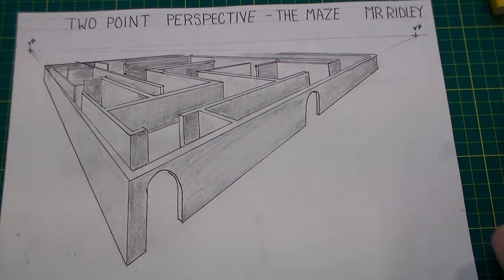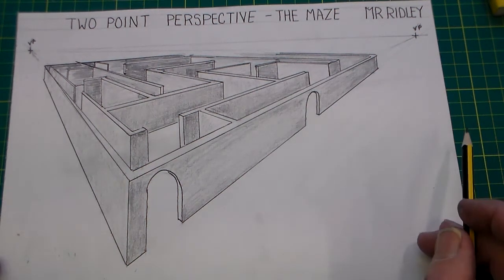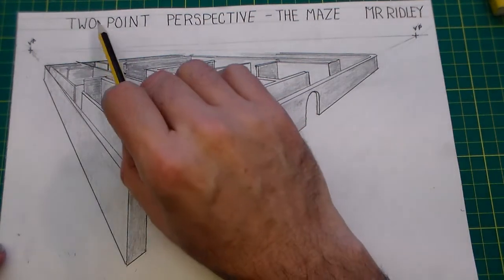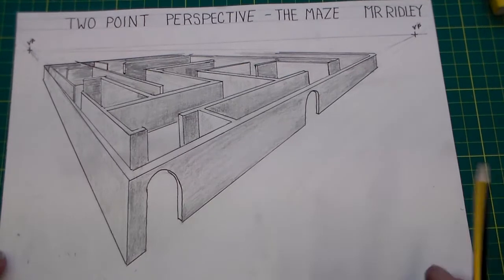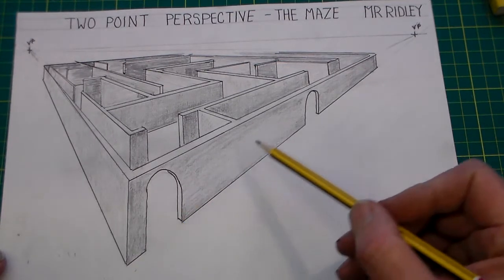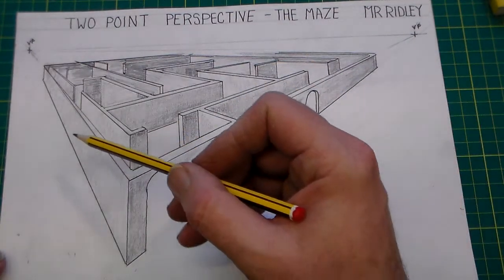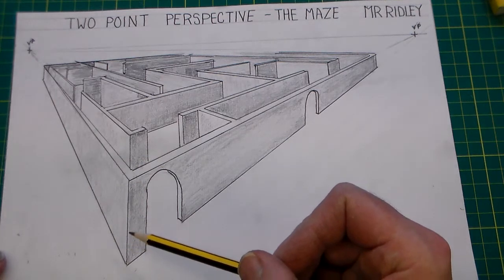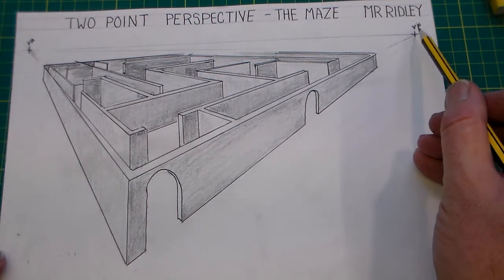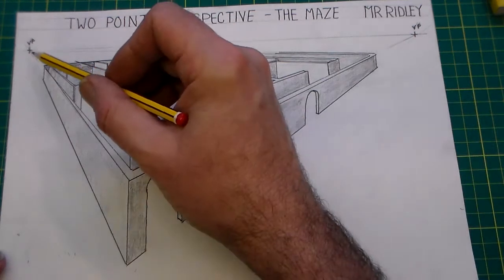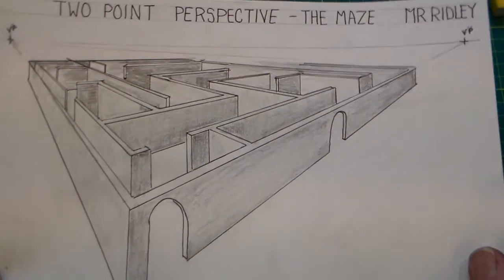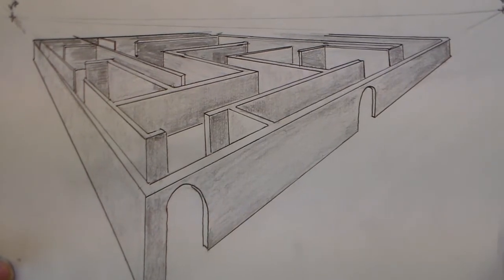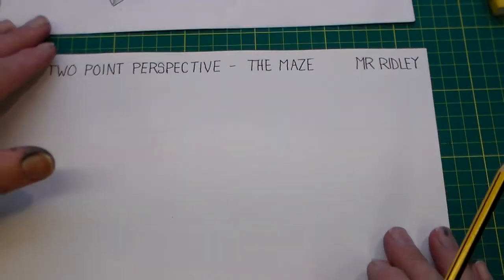Hello and welcome to this design and technology lesson. In this lesson we're looking at two-point perspective and we're calling this lesson 'the maze.' As you can see, we've drawn a diagram of a maze using the two-point perspective method, with a vanishing point here and a vanishing point there. Just take a closer look at that — there's the maze — and let's start.